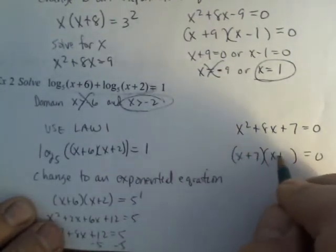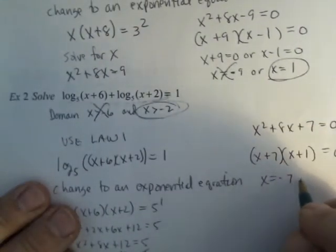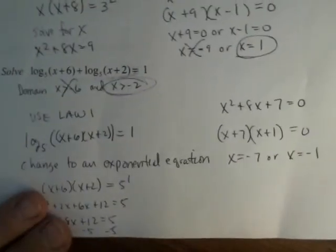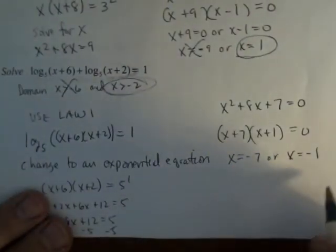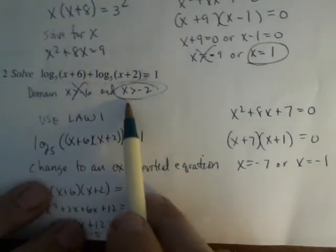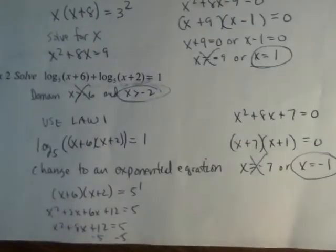Factor. So numbers that multiply to give you 7 that add to be 8. Solve. And then choose whether both, 1 or none of the solutions work. Since our domain we found was x is greater than negative 2, negative 1 is the only solution that works. Negative 7 will not check once we substitute it back in.